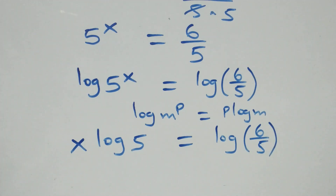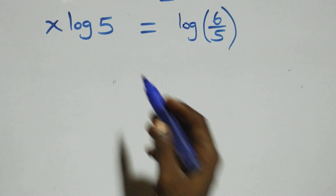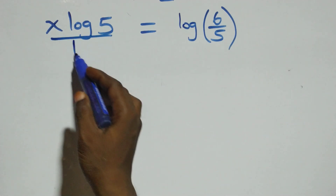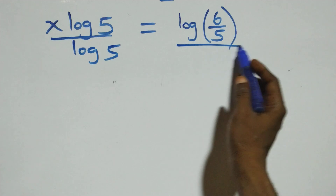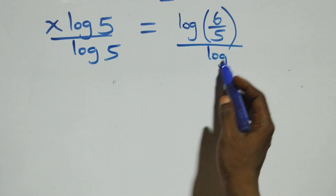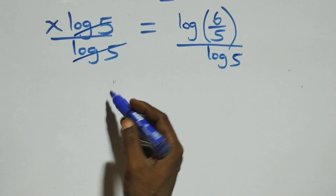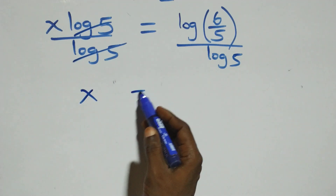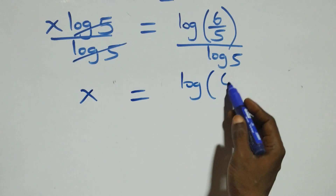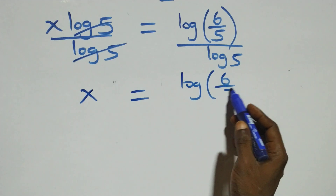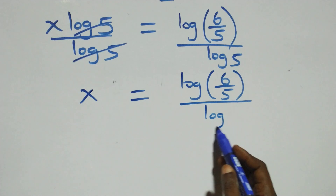Then the next step here, we divide both sides by log five. Log five cancels each other and we are left with x which equals to log six over five, divided by log five.